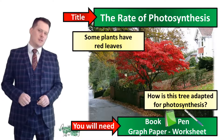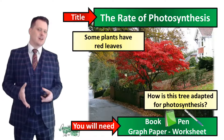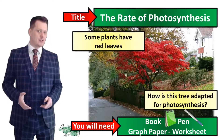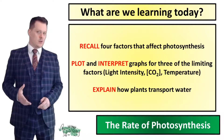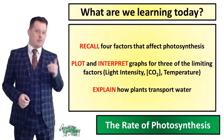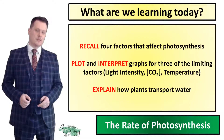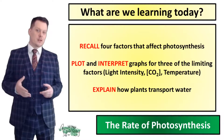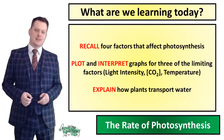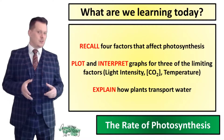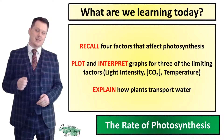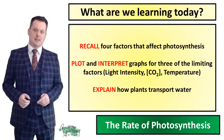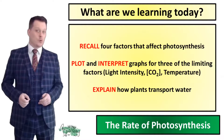Today we are going to be looking at some of the other factors outside of leaf adaptations which can affect the rate of photosynthesis. We are going to look at four factors: light intensity, concentration of carbon dioxide, and temperature. We're also going to touch on how plants transport water.